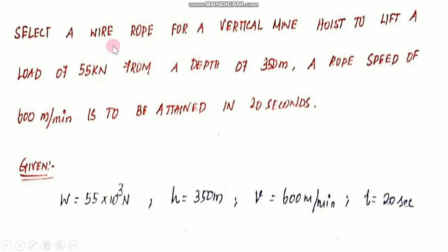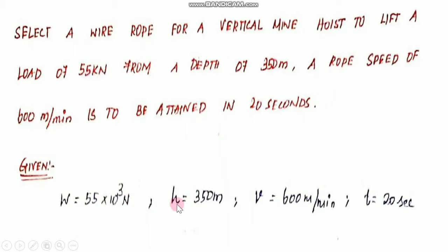Problem: Select wire rope for a vertical mine hoist to lift a load of 55 kilo-Newton from a depth of 350 meters. A rope speed of 600 meters per minute is to be attained in 20 seconds. Data: mine hoist, load W = 55 kN, depth = 350 m, speed V = 600 m/min, time = 20 seconds.